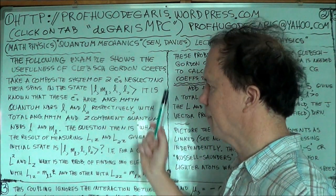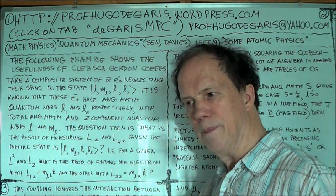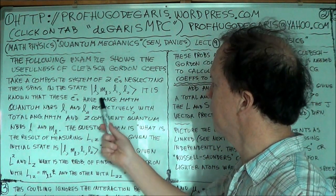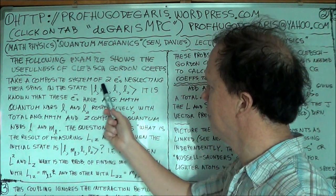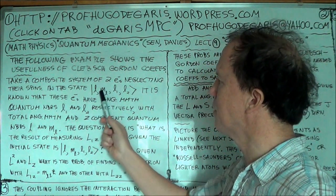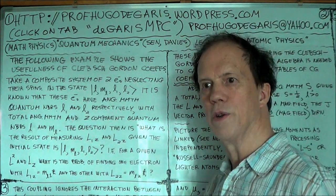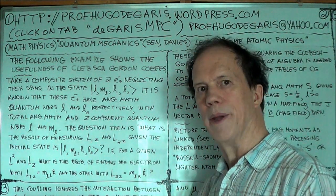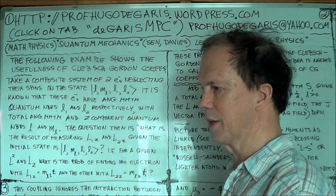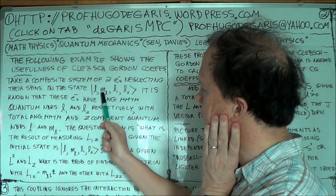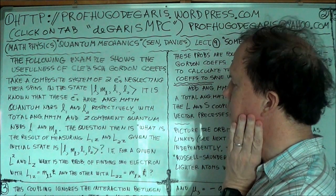Now so we're given this state. And we're asked the question then, well okay, so we know ml, you know, that's the component of the total angular momentum along the x-axis. Sorry, the z-axis, okay, ml.